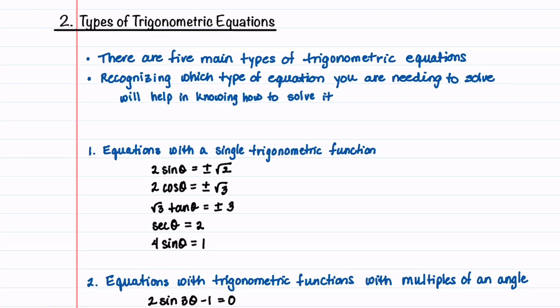The first thing you need to do when solving a trigonometric equation is to find out which of the five main types of equations you're trying to solve. The first type of trigonometric equation is an equation with a single trigonometric function. I've listed five examples here.